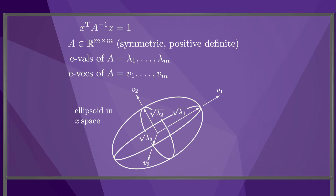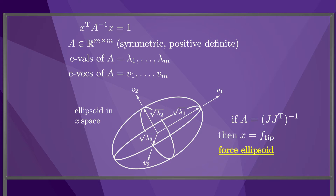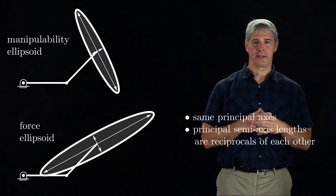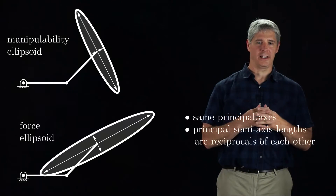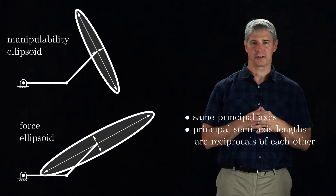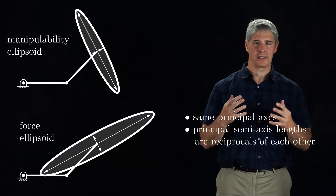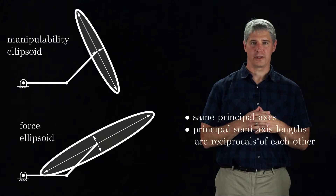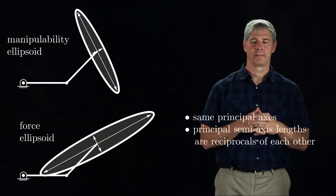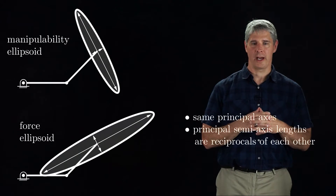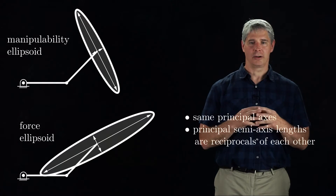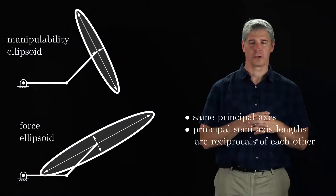If instead we set A equal to the inverse of J times J transpose, then the x vector can be interpreted as the end effector force f-tip, and the ellipsoid is called the force ellipsoid, resulting from a unit sphere of joint forces and torques. This figure shows the manipulability ellipsoid and the force ellipsoid for a 2R robot at a particular configuration. Since the matrix defining the manipulability ellipsoid is just the inverse of the matrix defining the force ellipsoid, the two ellipsoids have the same principal axes, and the lengths of the principal semi-axes are just the reciprocals of each other. In other words, only small forces can be applied in directions where large velocities can be attained, and only small velocities are possible in directions where large forces can be applied.